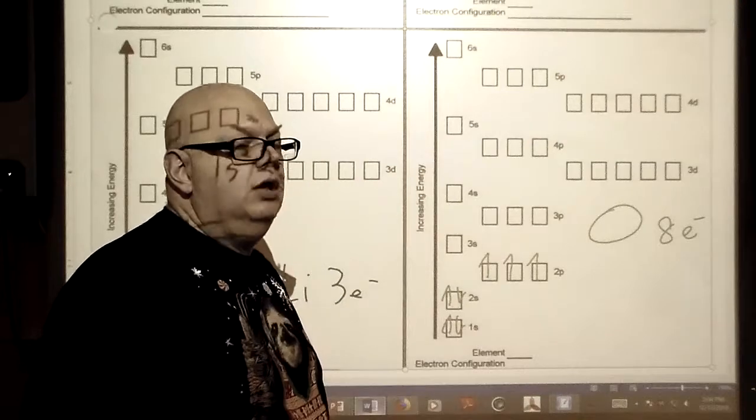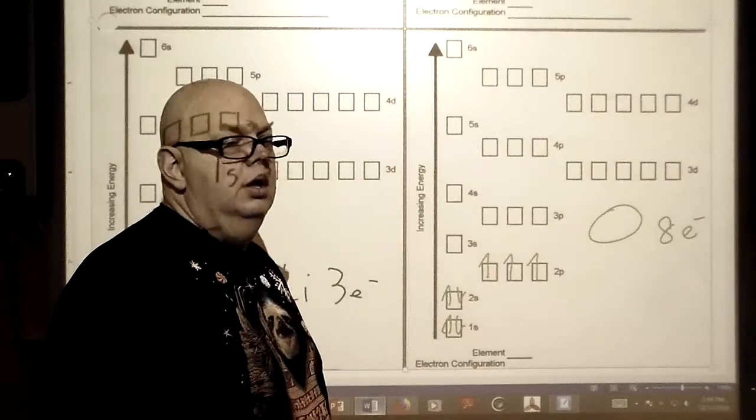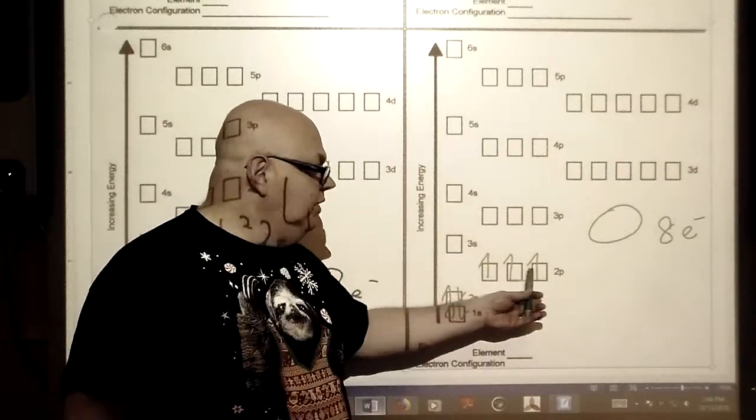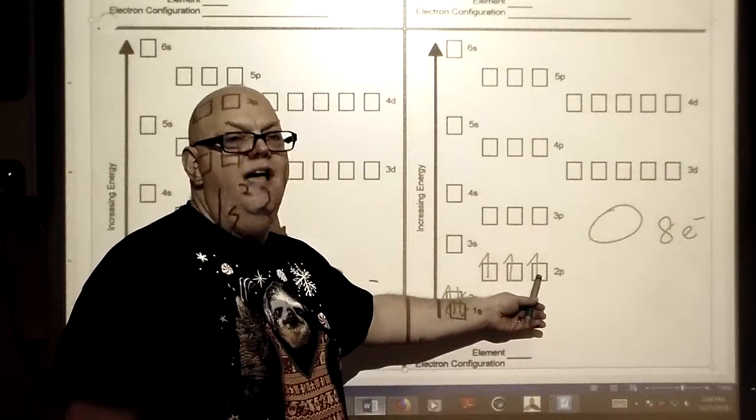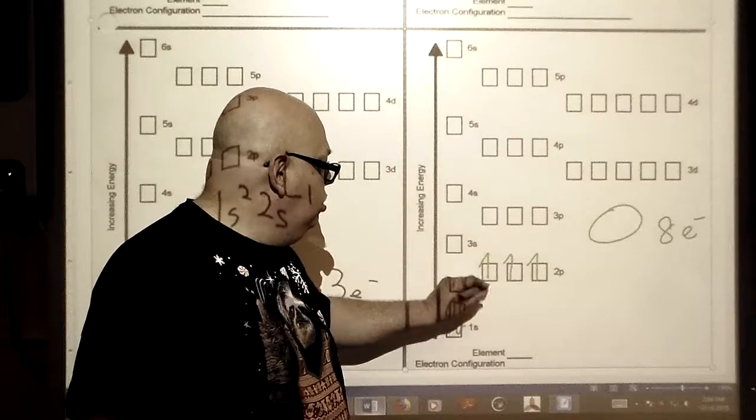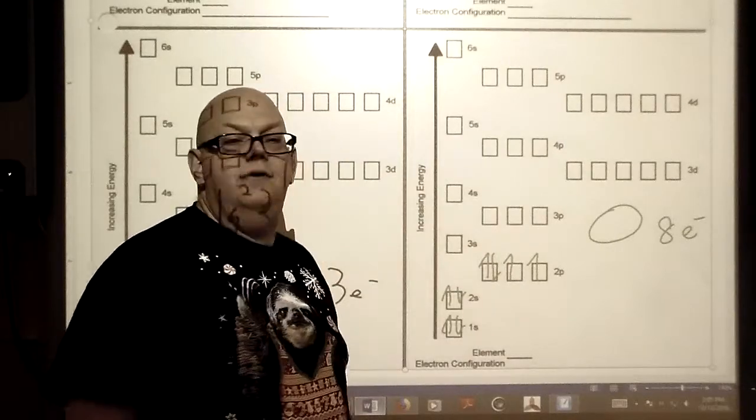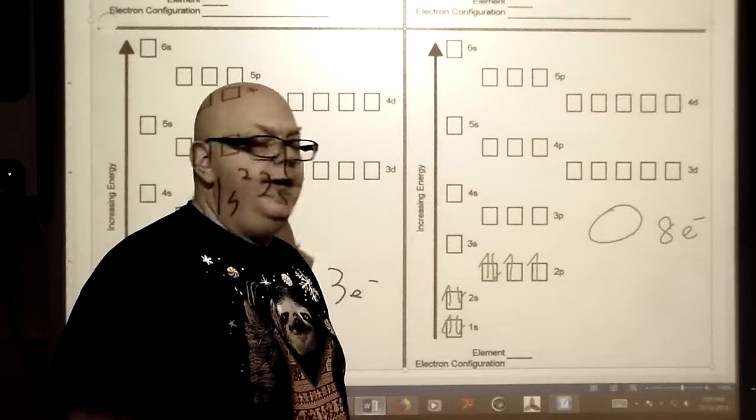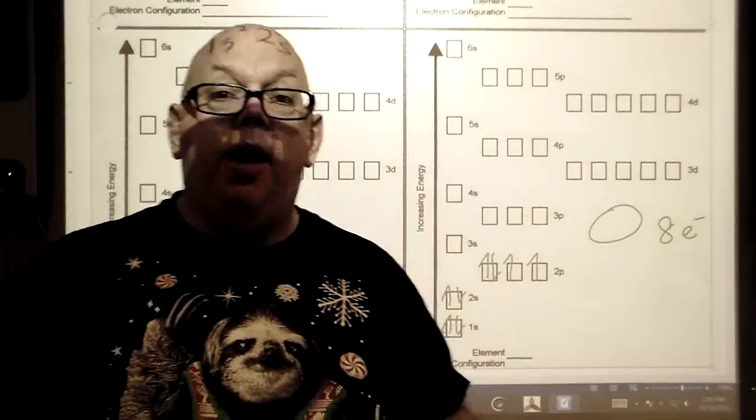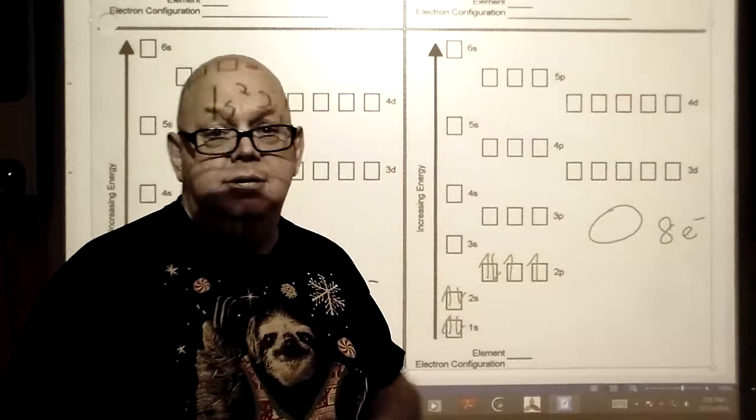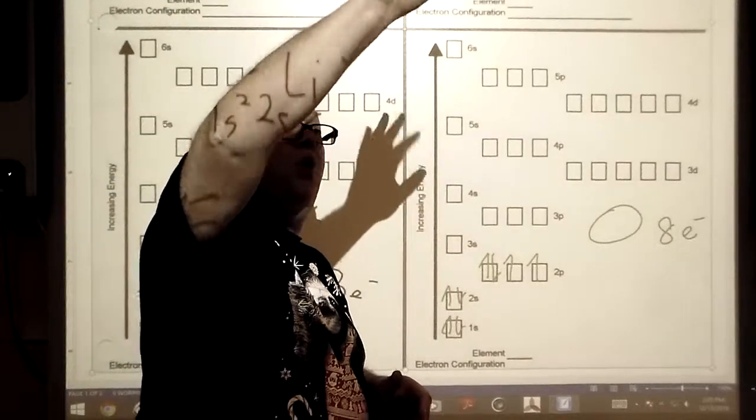Wait, couldn't you put the two over here? No, there's something called Hund's rule where they say when you put the electrons in, you have to fill in each sublevel orbital first before you go back to the original and fill it.